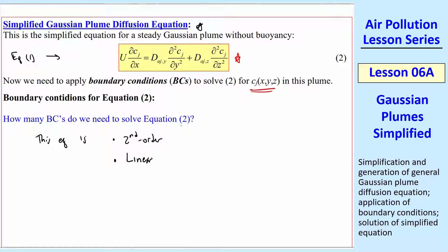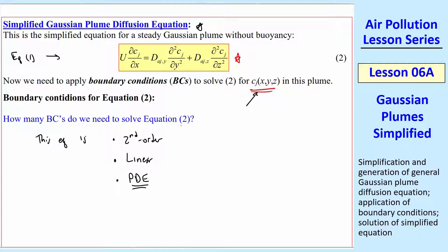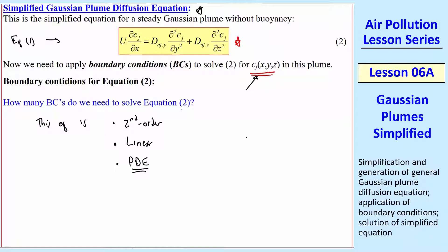It's also linear. The coefficients — these D's and this U — U is just a constant, and D_a,j,y and D_a,j,z are functions of x, which is fine. Coefficients can be functions of x, y, or z and the equation is still linear. It would be nonlinear if D were a function of c_j, the dependent variable, or if U were a function of c_j. This is also a PDE — a partial differential equation — because c_j is a function of more than one variable. So it's a second order linear partial differential equation.